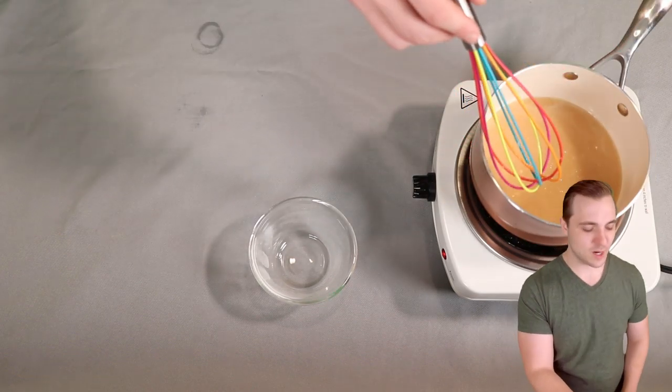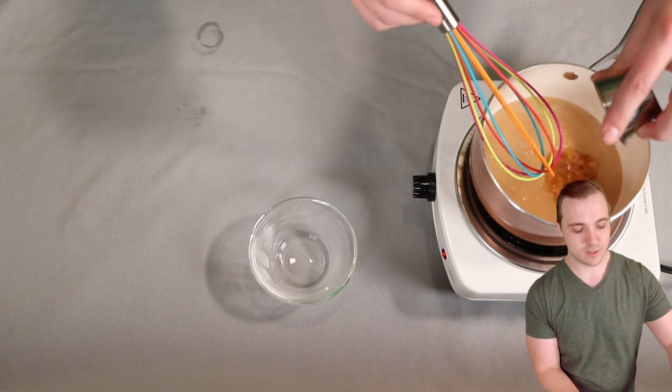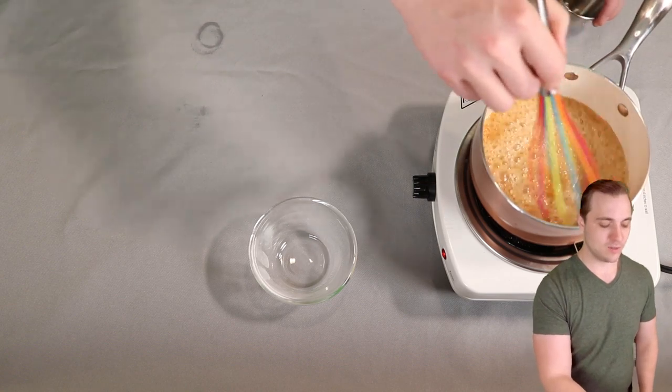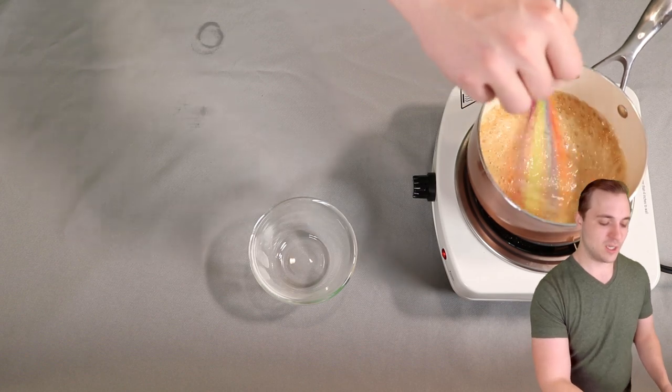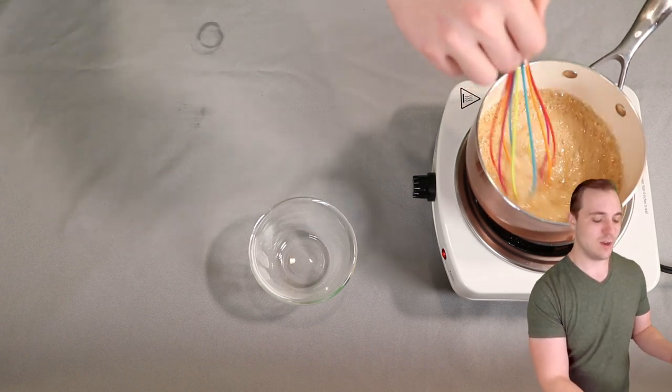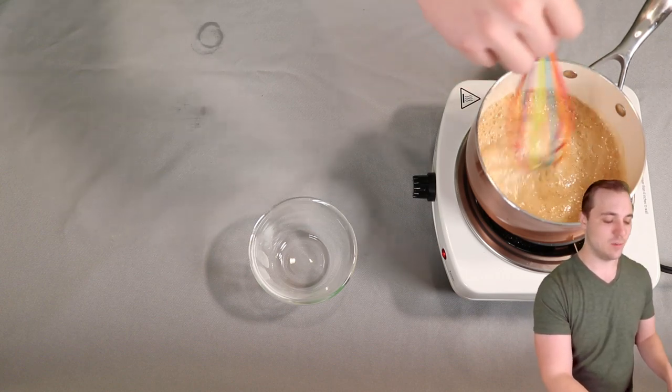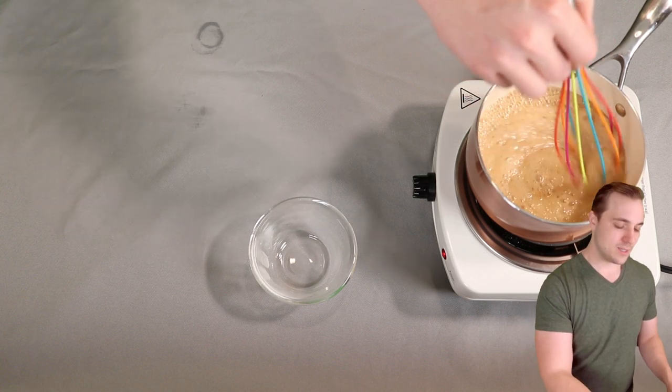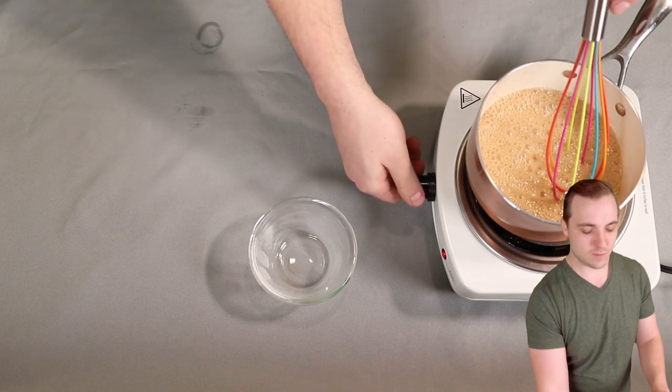Alright, now this is starting to caramelize a little bit and you can see the bubbles kind of coming up. So at this point I am going to add in my vanilla extract. It is going to sizzle just a little bit and that is actually going to cause the caramel to puff up just a little bit. Just keep stirring through this. The reason I didn't add it in the beginning was because I didn't want to evaporate off a ton of that vanilla extract and I find that this leaves a little bit more vanilla flavor behind. In any case, now that we have done that and it looks like a good caramel color, we are going to go ahead and turn off the heat.